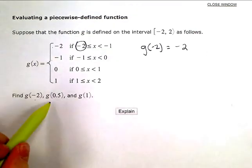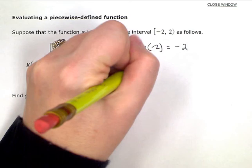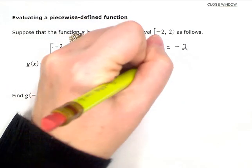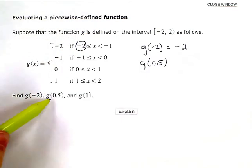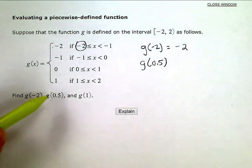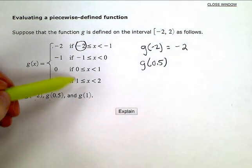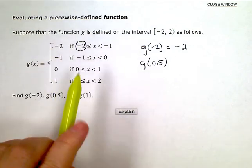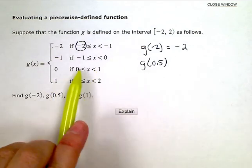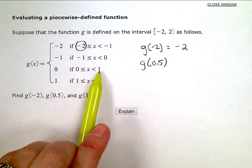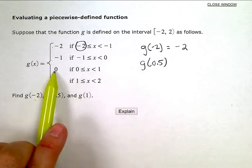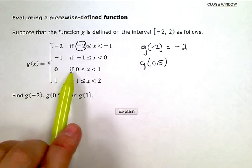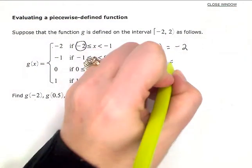Then I'm going to do g of 0.5. If my input into my function is 0.5 or x is 0.5, look up here, positive 0.5 would fall into this interval between 0 and 1. So this is going to be 0.